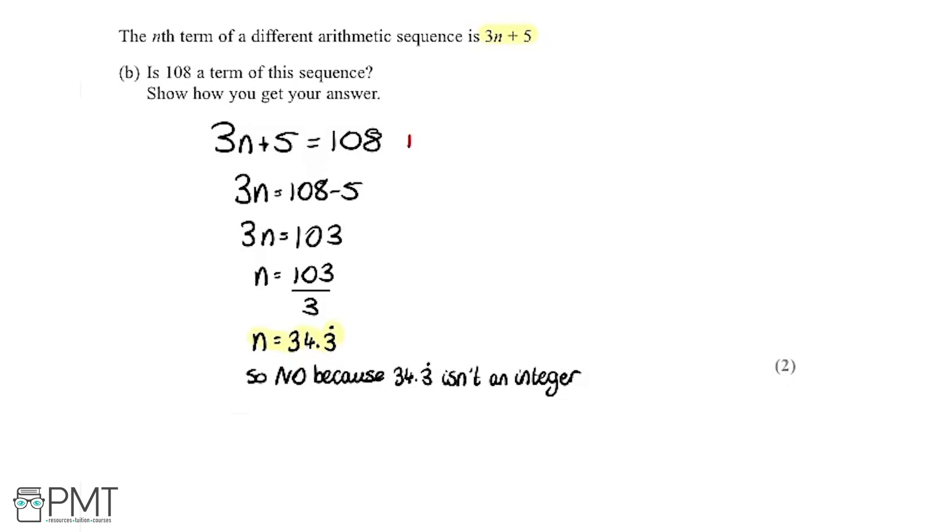So seeing where we get the two marks from, we get one up here for starting a method like this, then we get a second mark for realizing, okay, so n isn't an integer, so it's impossible if the answer is no. And then saying no and writing a convincing argument here, just saying that it's not an integer.